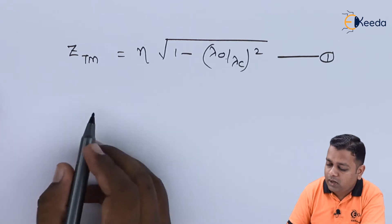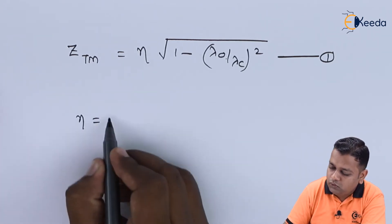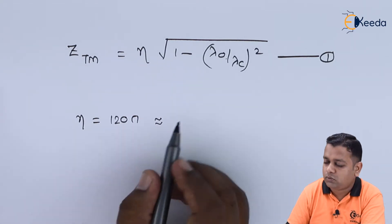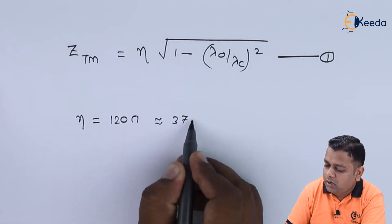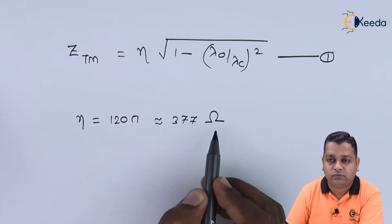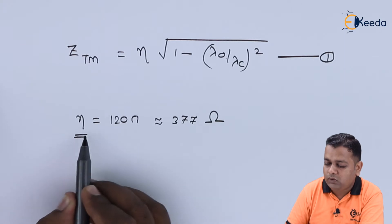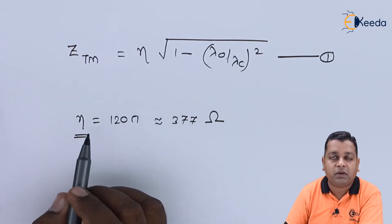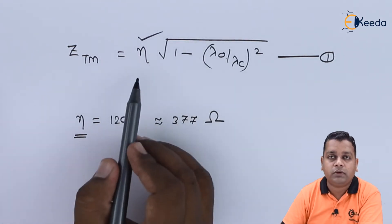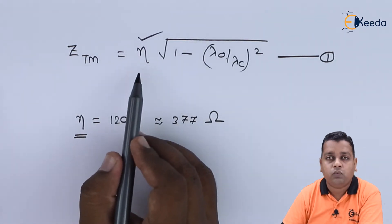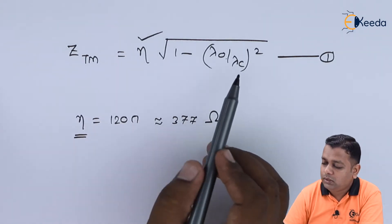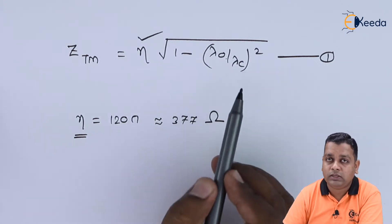The intrinsic impedance η equals 120π, or approximately 377 ohms. This is the constant value of intrinsic impedance for wave propagation in air or free space. This value can now be substituted in place of η in equation one, giving us one parameter on the right-hand side already available.